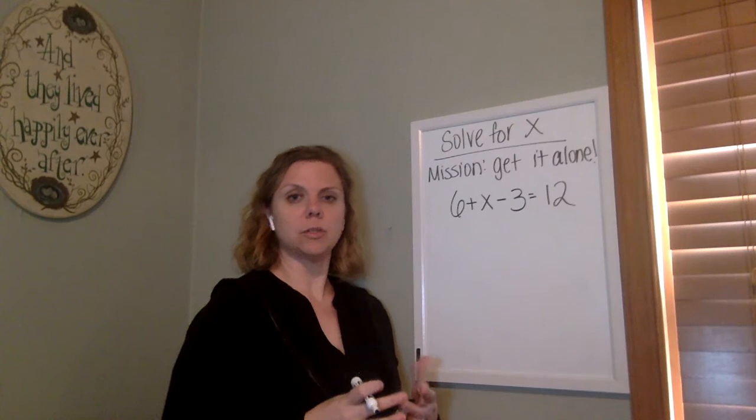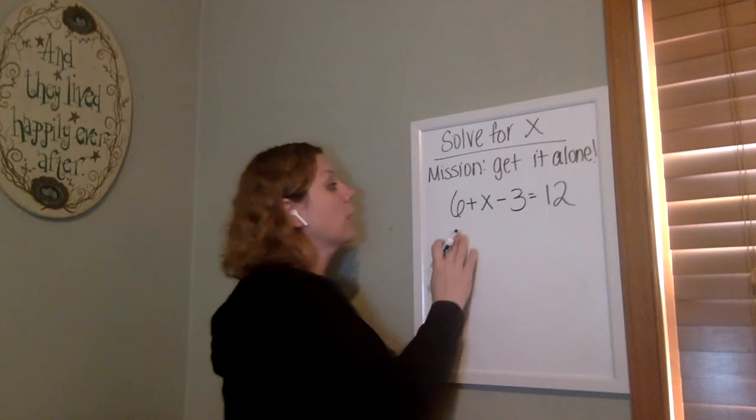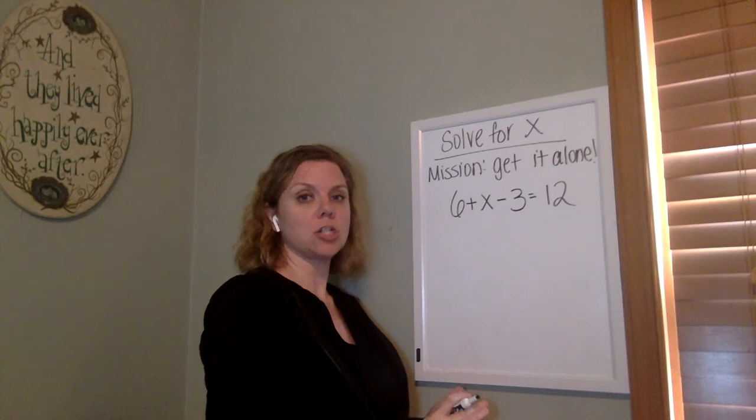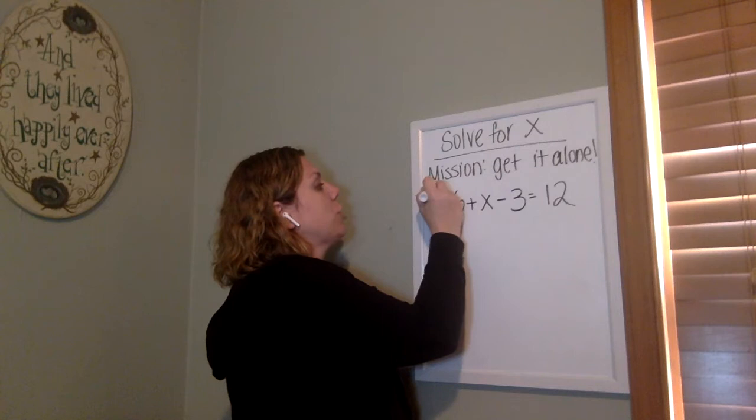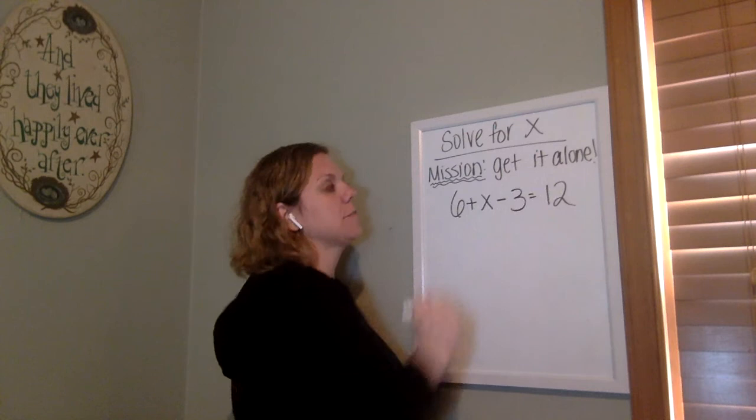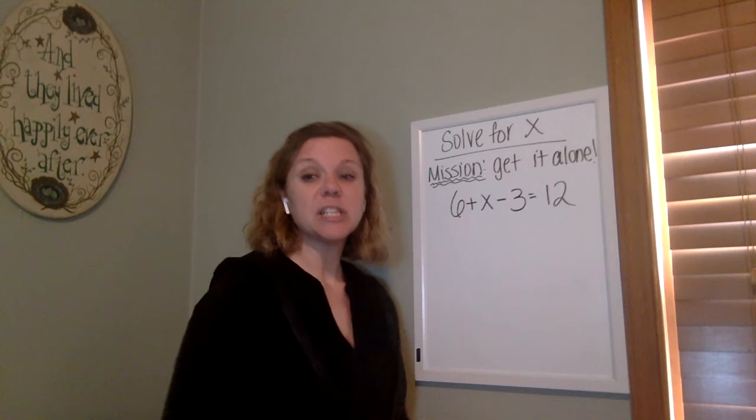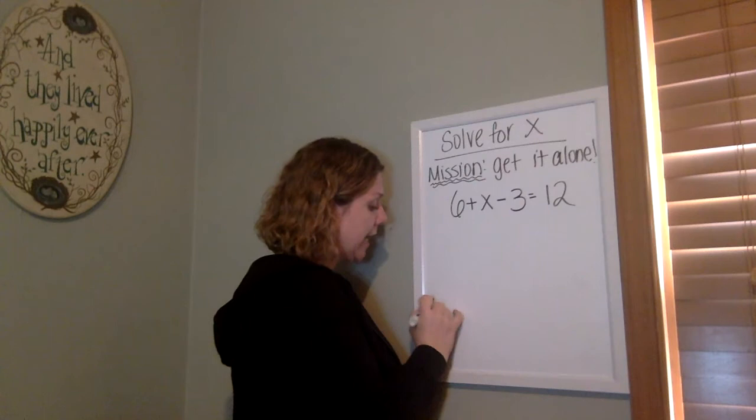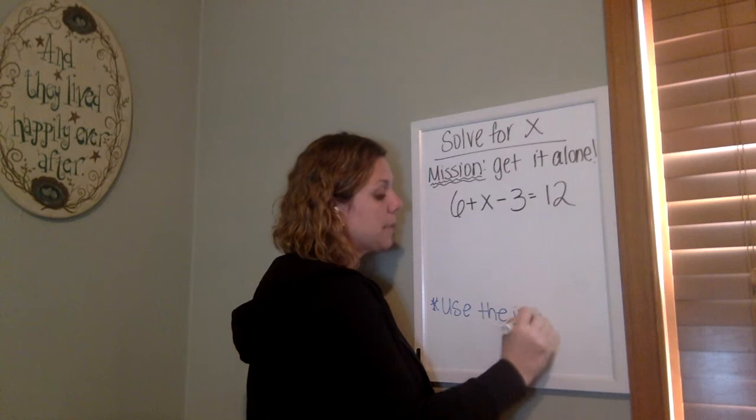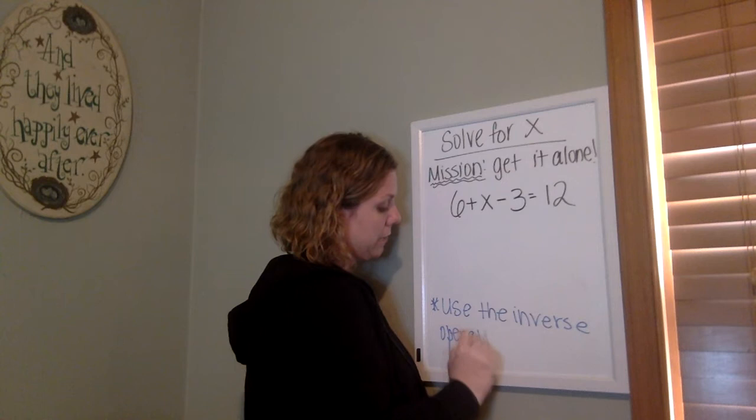So before we were looking at expressions where it was relatively simple to say, well, that's a blank, and I'm going to fill in the blank. There are times, however, where we have more than one thing going on on one side of our equation, and it makes it a little bit harder to just kind of fill in a blank. So what we're going to do here is we're going to solve for x, and we're going to have a new mission. The mission is to get it alone. It means the variable. So we need to get the x by itself. Because if I have x equals blank, then I know what x is, right? How am I going to get it alone? This is super important. So make sure you're paying attention. I have to use something called an inverse operation.